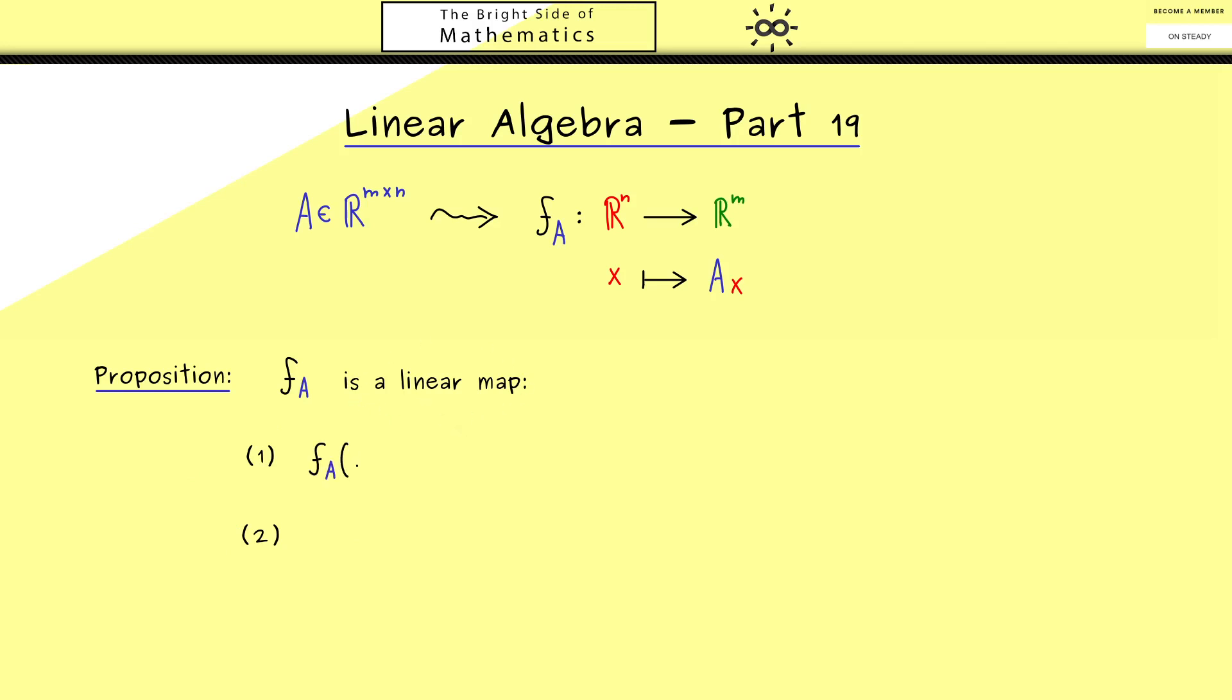Then let's recall from the last video what these two properties mean. The first one tells us that we can pull out the addition sign. So if we add two vectors and put the result into a map, it's the same as adding both outcomes. And then the second property tells us that we can pull out scalars. So the scalar lambda here can also be written in front of the map. Indeed, this property is what you would call homogeneous.